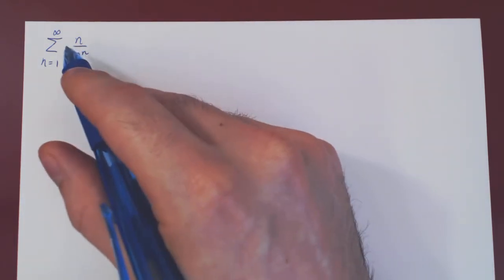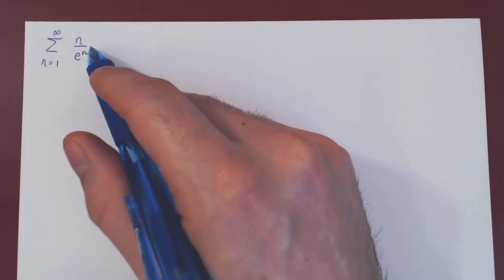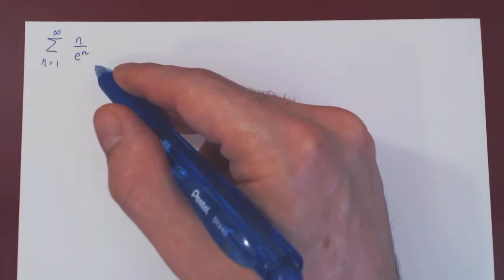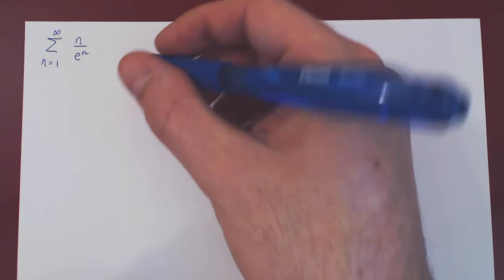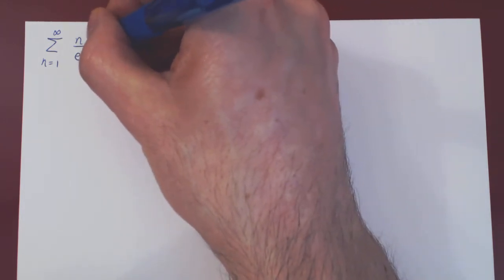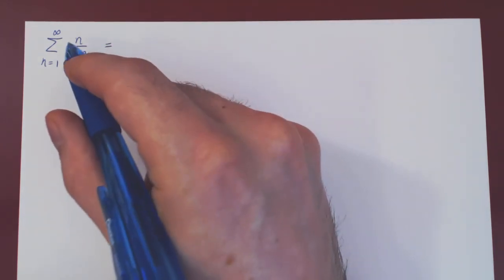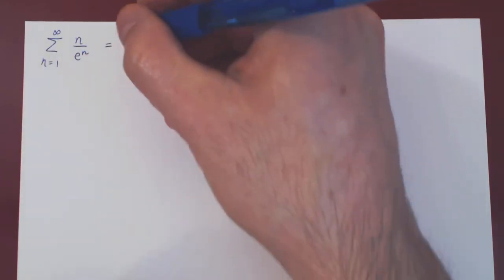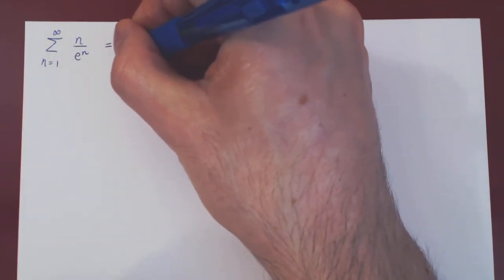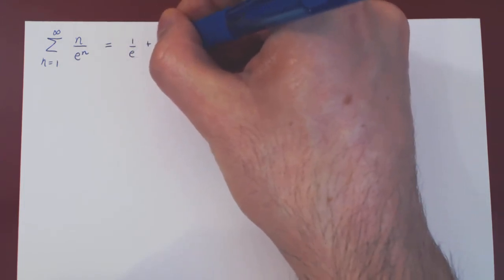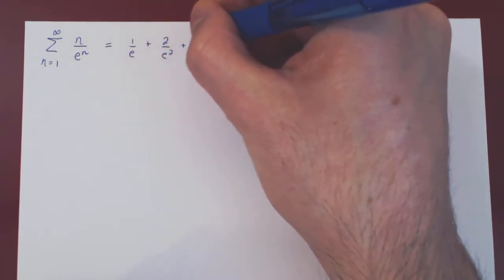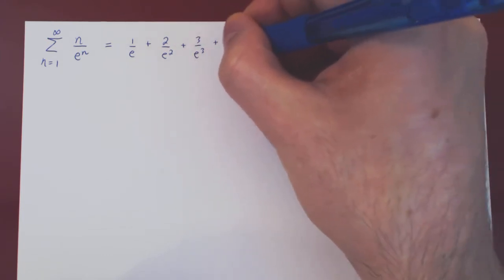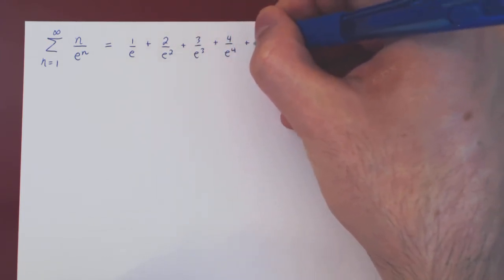In this video, we will determine whether the series converges or diverges using the integral test. To get a feeling for what kind of terms we're summing, we can expand out the first few terms of the series. We are summing n over e to the n, n going from 1 to infinity. So the first term is simply 1 over e, plus 2 over e squared, plus 3 over e cubed, plus 4 over e to the 4, and so forth.